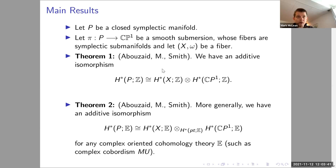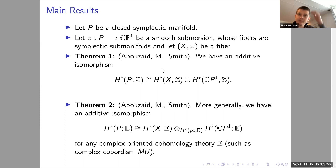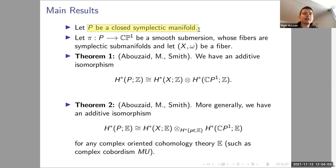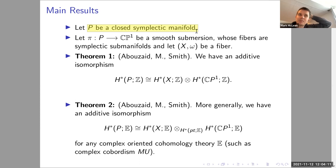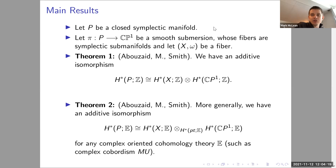I want to explain the techniques we use. This fibration π is called a Hamiltonian fibration because P is a closed symplectic manifold — the fibers are symplectic and induced from a closed symplectic form on the total space — which means the monodromy maps are Hamiltonian.